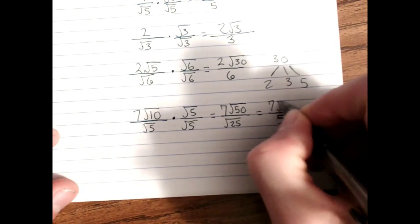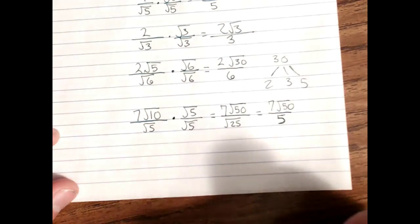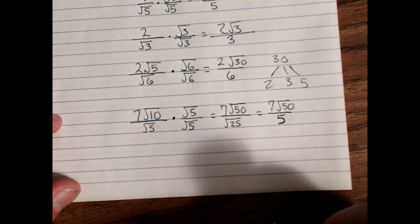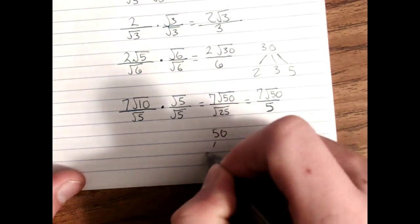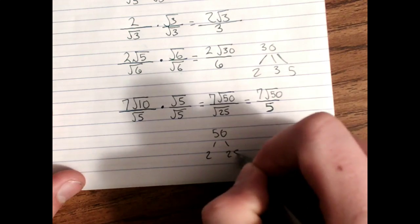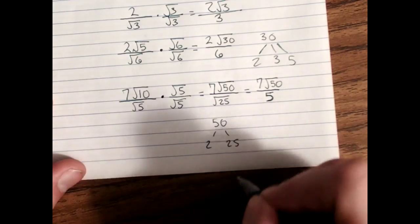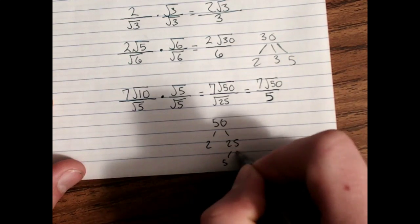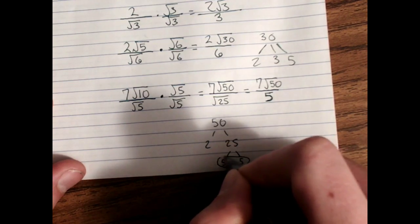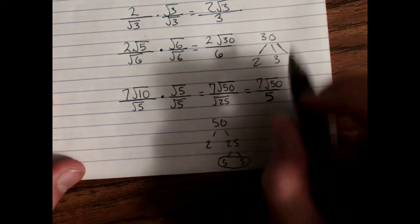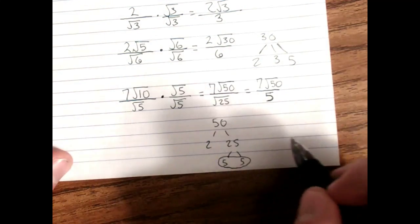Now what about this root 50? Well, we know that that simplifies. We know that 50 simplifies to 2 and 25, and 25 simplifies to 5 and 5. There's our double, which means we can pull a 5 out of this root 50.